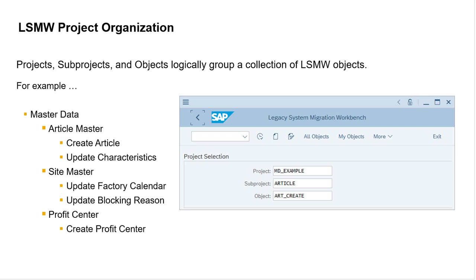LSMW provides for organizing many LSMW objects within a mandatory three-level hierarchy: project, subproject, and object. This is a handy way of organizing related LSMW objects. When you create an LSMW object, you must specify names for all three levels, and when you execute one, you must specify the project, subproject, and object. When you export or import an LSMW project, you can choose all or only selected subprojects and objects.